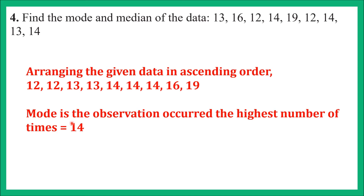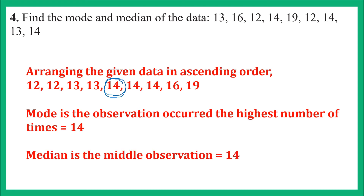Now let us find the median. We count the observations: 1, 2, 3, 4, 5, 6, 7, 8, 9 — there are 9 observations. For median: 9 + 1 = 10, divided by 2 = 5. So the 5th observation is the median. Counting: 1, 2, 3, 4, 5 — the 5th observation is 14. There are 4 observations on each side, so median = 14. Both mode and median are 14.